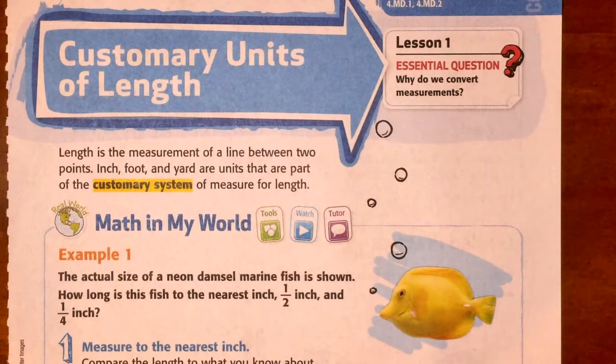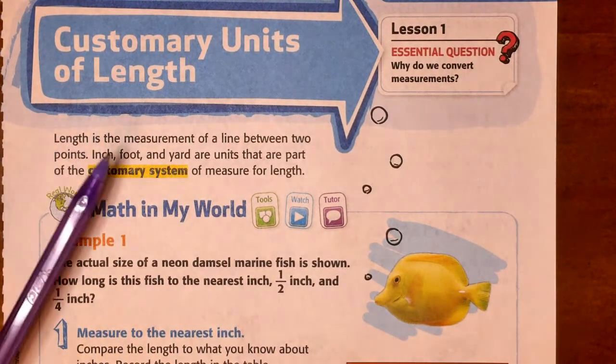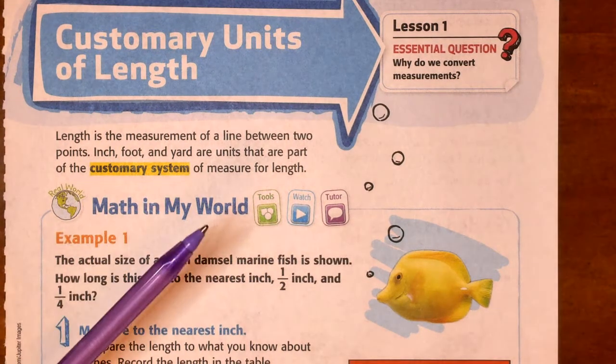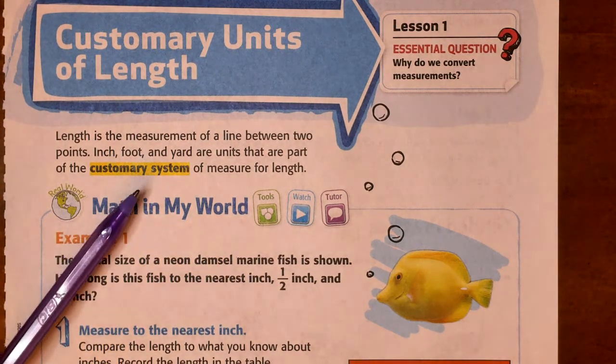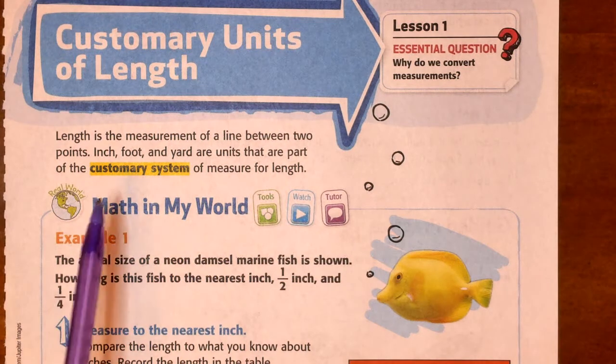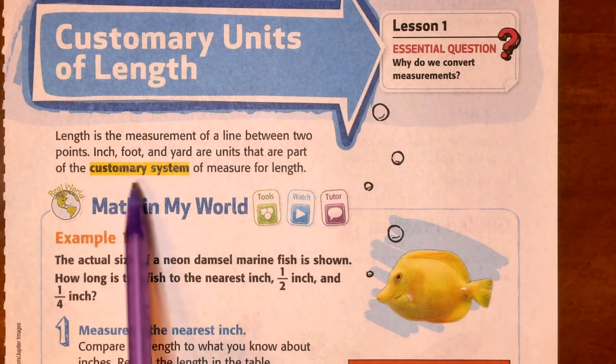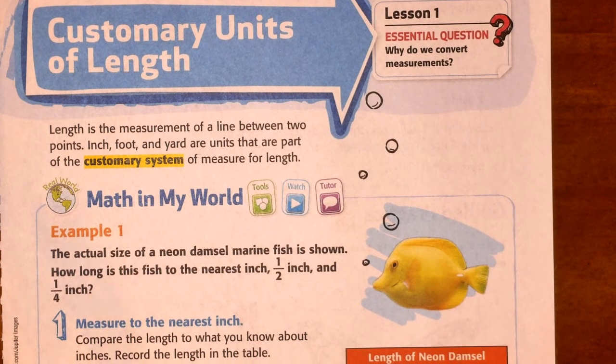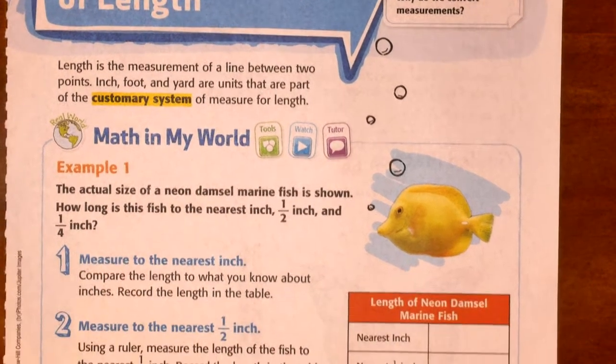Customary units of length. Length is a measurement of a line between two points. Inch, foot, and yards are units that are part of our customary system. This is what we use in the United States of America. The metric system is what most of the rest of the world uses.